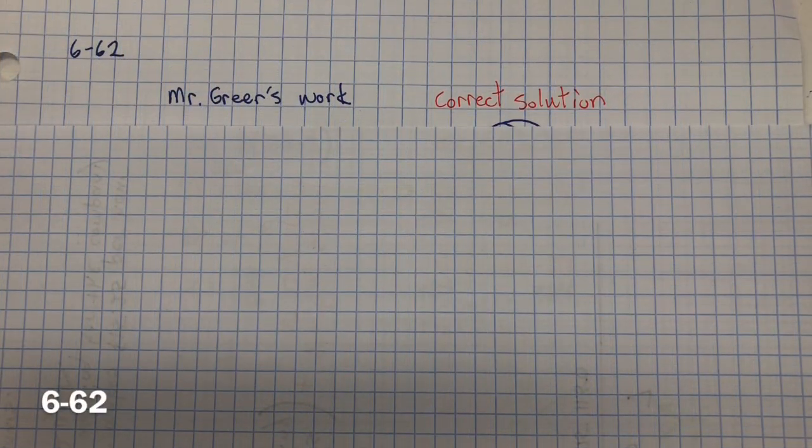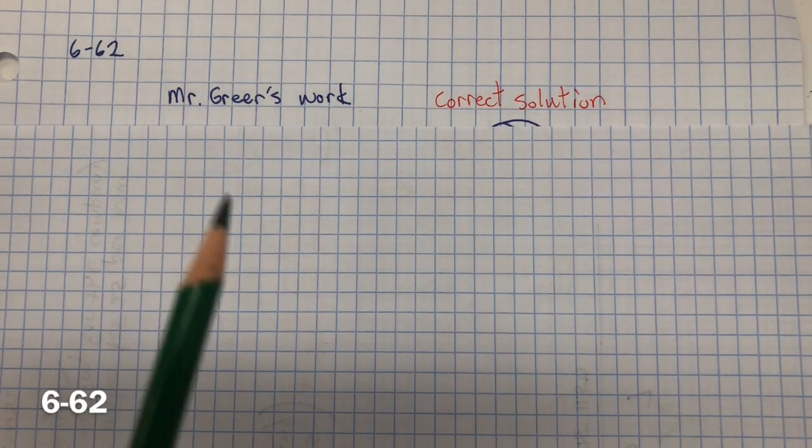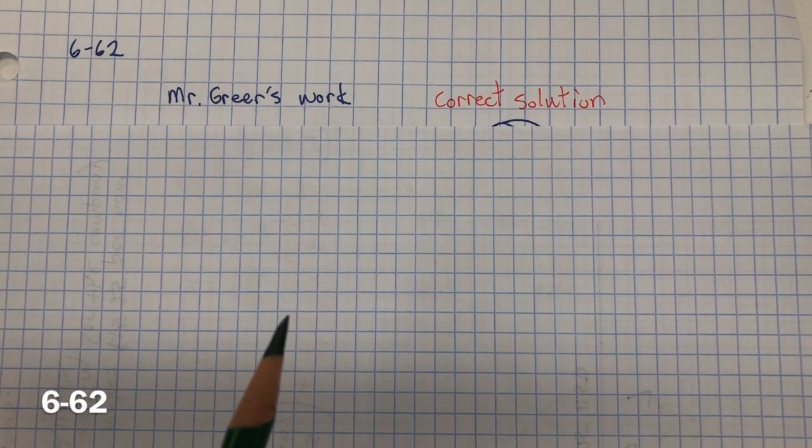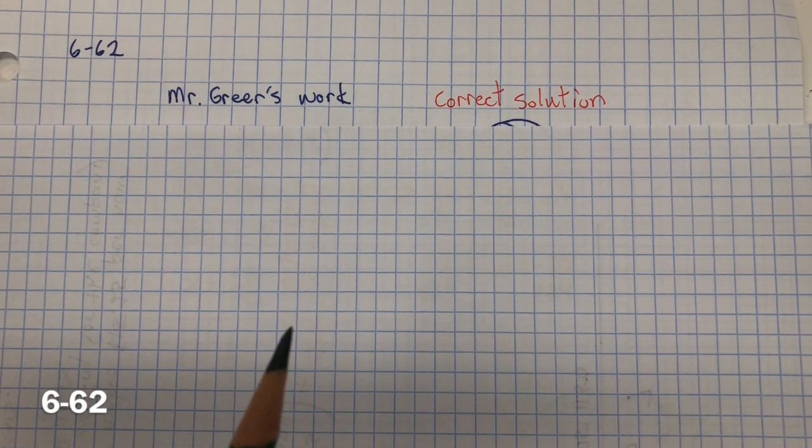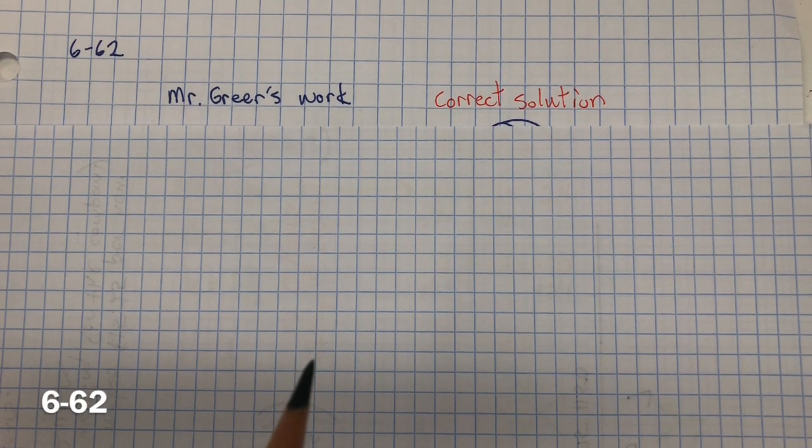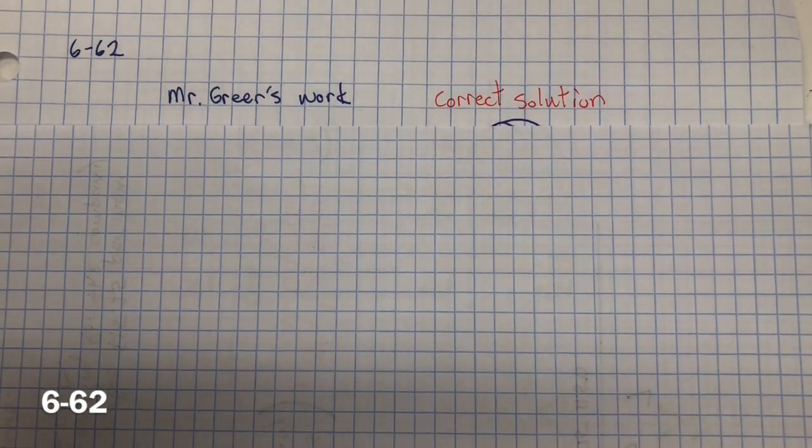In 6-62, Mr. Greer solved the equation, and after he checked his solution, it did not make the original equation true. So you need to define the error.